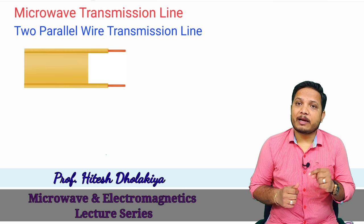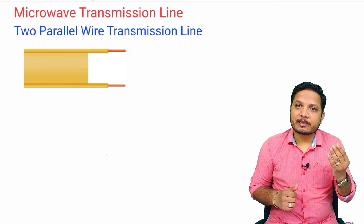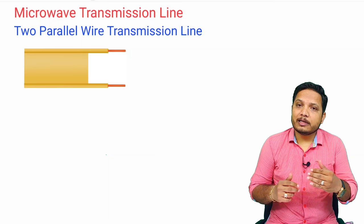Microwave transmission lines have been broadly classified into three categories: one is two parallel wire transmission line, second is coaxial cable transmission line, and third is microstrip transmission line. All three categories will be discussed in detail.